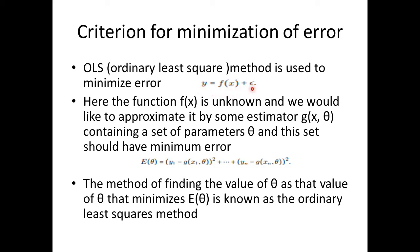Here f(x) is the input function and e is the error term. The function f(x) is unknown, and we approximate it by an estimator g(x, theta). We develop theta such that the set of parameters gives minimum error. The error equation is written as E(theta) equal to the sum of (yi minus g(xi, theta)) squared, from i equals 1 to n. This is the least square method.